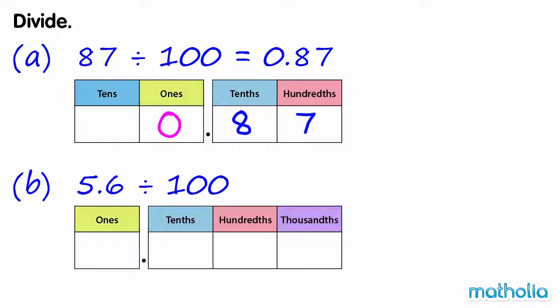5.6 divide 100. Write 5.6 in the place value chart. Shift the digits two places to the right. 5.6 divide 100 equals 0.056.